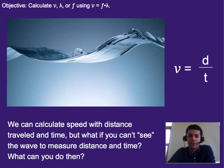So normally we can calculate speed with distance traveled and time, we just take distance divided by time and that gives us speed. But what if we can't see the wave to measure its distance and time? What if it's a light wave or a sound wave and we can't actually see it? What can we do then?